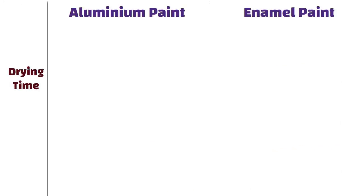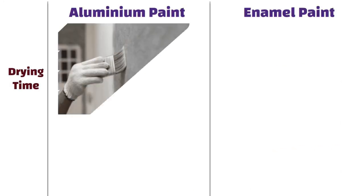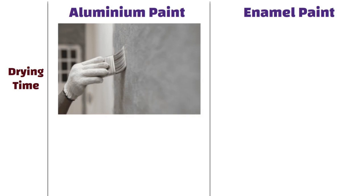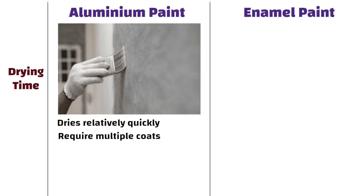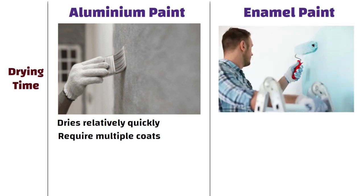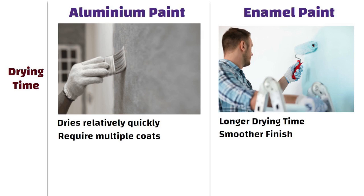Drying time. Aluminum paint typically dries relatively quickly, but it may require multiple coats to achieve full coverage. On the other hand, enamel paint has a longer drying time which allows for a smoother finish, but it may take longer to complete a project.